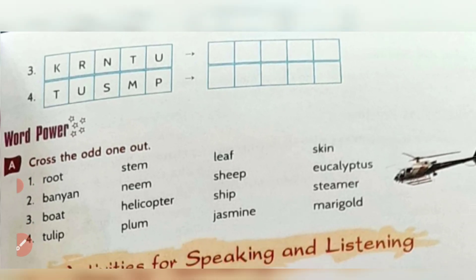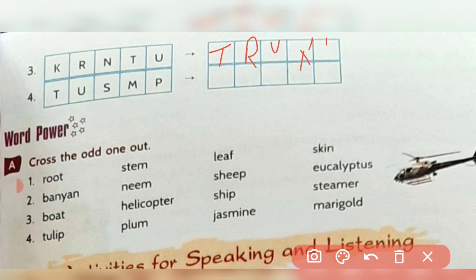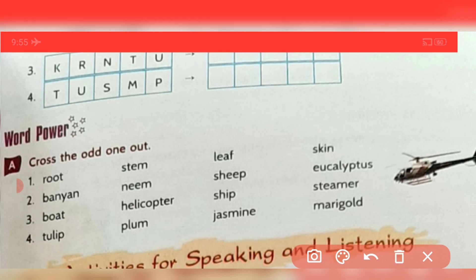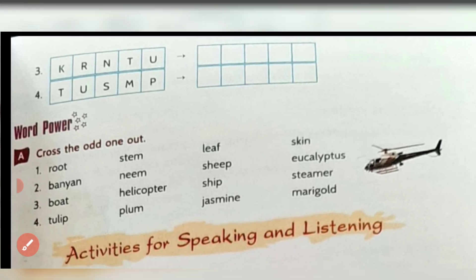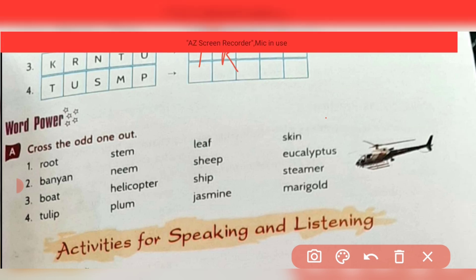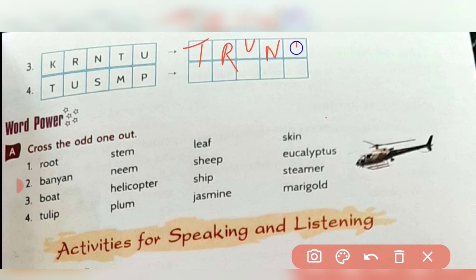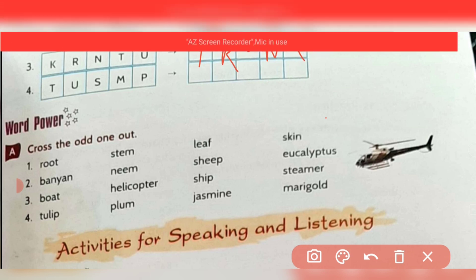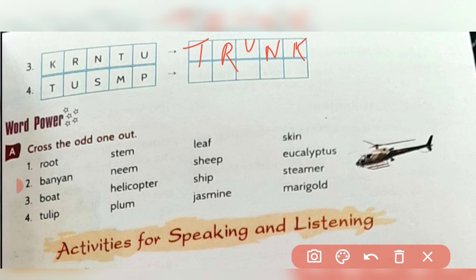Third: K-R-N-N-T-U — rearranged gives 'trunk' (T-R-U-N-K). Fourth: rearranged gives 'stump' (S-T-U-M-P). Remember you have to write your answers in the boxes in pencil.